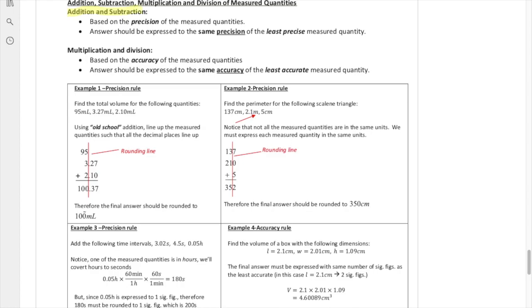The basic rules go as follows. If we're dealing with addition and subtraction, it's based on the precision, or the decimal depth, and the answer should match the precision of the least precise measured quantity. So if one measured quantity only goes as deep as one decimal place, but the other ones go as deep as two decimal places, then the final answer can only have one decimal place.